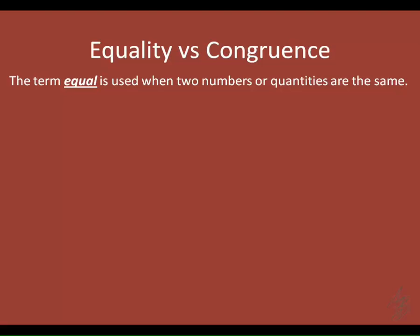Starting over: we use equal when numbers are the same, and we use congruent when shapes are the same.